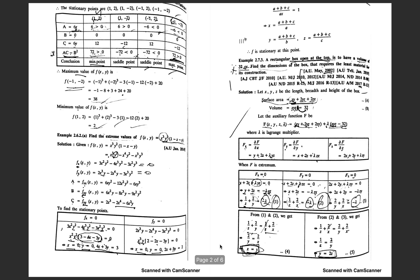From these critical values we form the candidate points: (1, 2), (1, -2), (-1, 2), and (-1, -2). We then create a table to evaluate a, b, c, and Δ = ac - b² at each of these points.